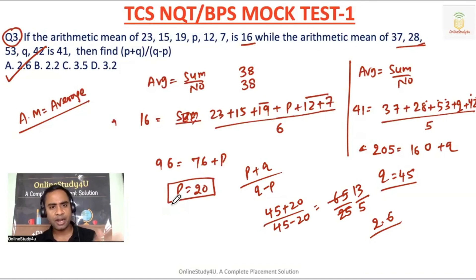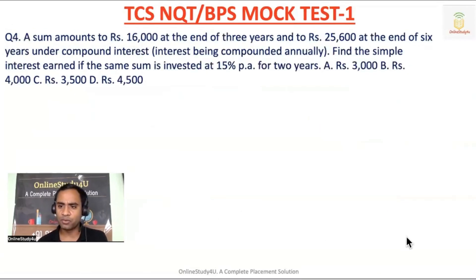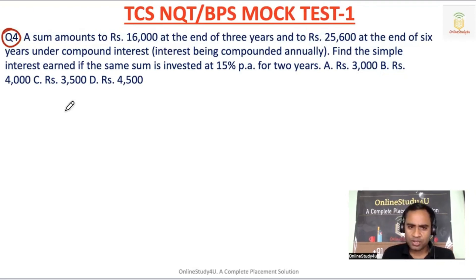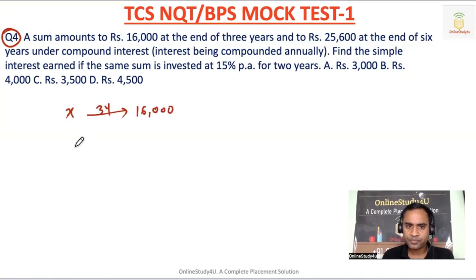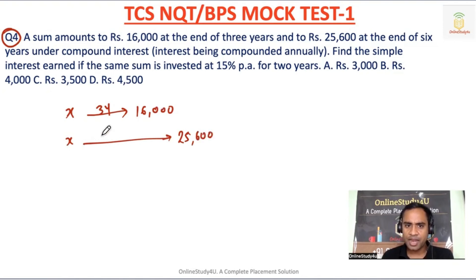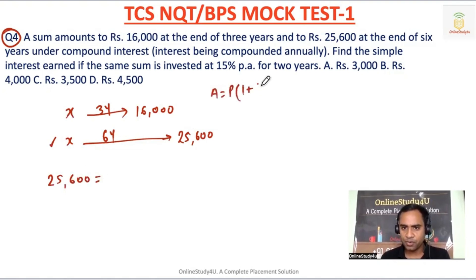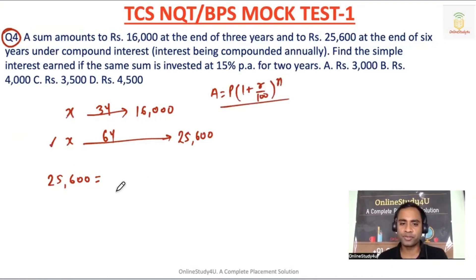Don't be afraid of the question — read, understand, and then solve. Question number four is a compound interest problem. A sum amounts to 16,000 rupees at the end of 3 years and 25,600 rupees at the end of 6 years. You invested x rupees and it becomes 16,000 in 3 years and again the same principal becomes 25,600 in 6 years. The formula for compound interest amount is: A = P × (1 + r/100)^n. Writing equation 1 for 6 years and equation 2 for 3 years.